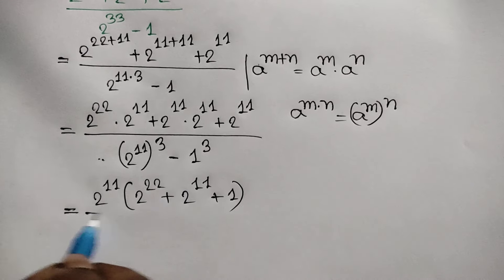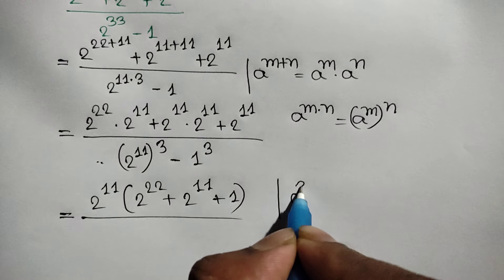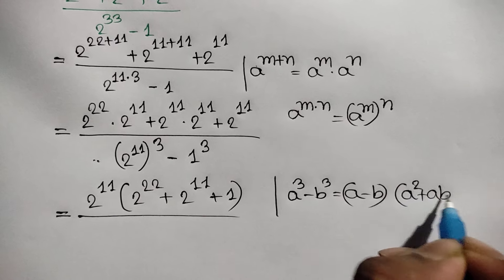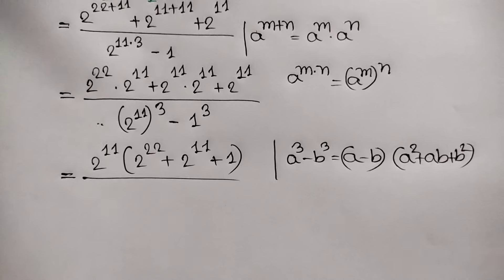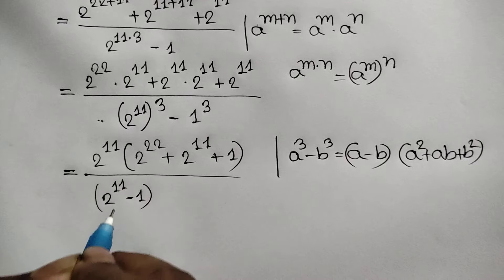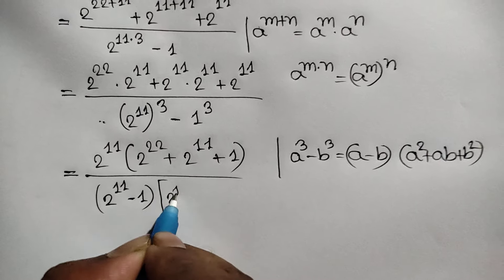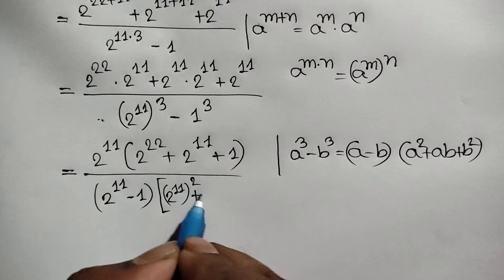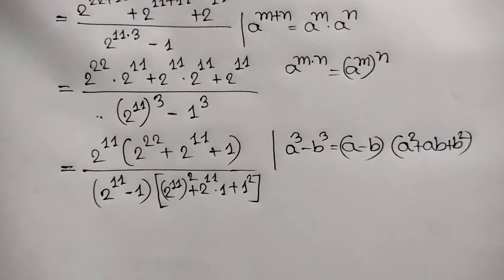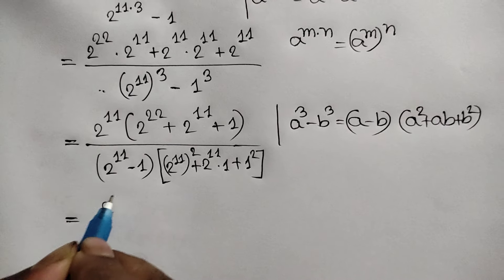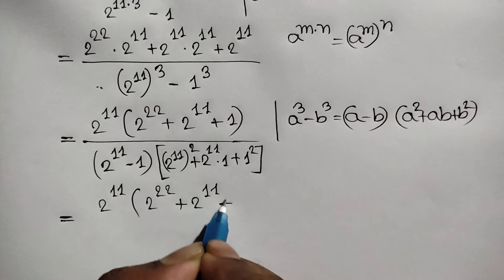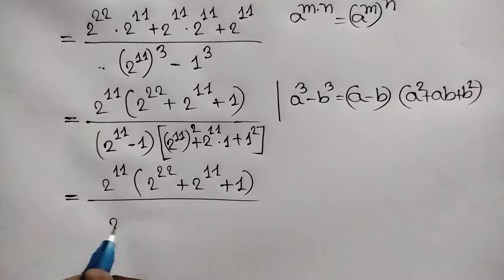For the denominator, we use the algebraic rule: a cubed minus b cubed equals (a minus b)(a squared plus ab plus b squared). Applying this, the denominator becomes 2 to the power 11 minus 1, times the quantity 2 to the power 11 whole squared, plus 2 to the power 11 times 1, plus 1 squared. This expands to: 2 to the power 22 plus 2 to the power 11 plus 1.